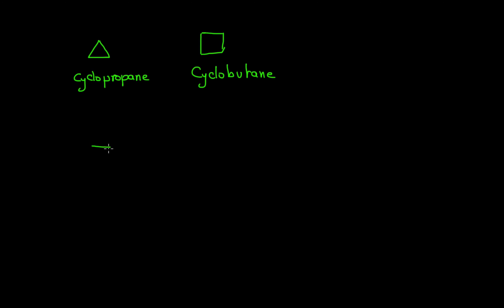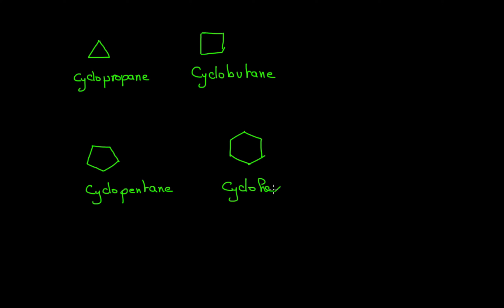A five-membered ring is called cyclopentane, and a six-membered ring is called cyclohexane, and so on. If you have a seven-membered ring, this is going to be cycloheptane, et cetera. Note that in order to form a cycle you will need at least three carbons, so cyclopropane would be the smallest cycloalkane in nature.